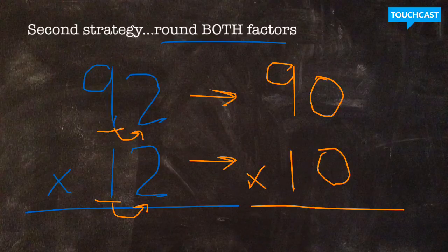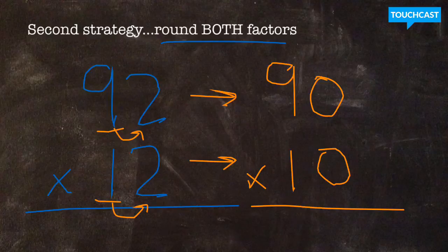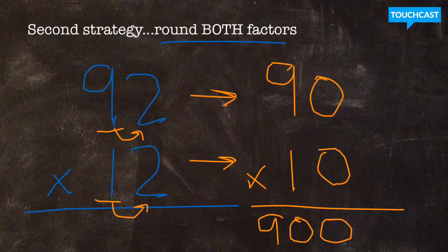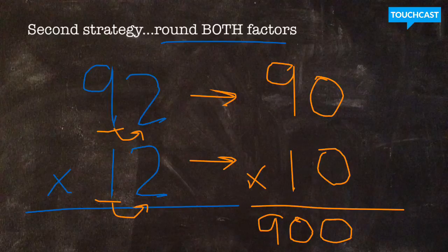Now, I have the easy mental multiplication equation of 90 times 10. My base factors are 9 times 1 is 9. Two zeros in my original equation equals 900. So my estimated answer is 900. The estimated product would be 900.